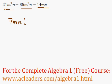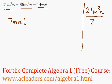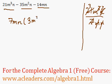Let me just write it on the side here. 21m³n divided by 7mn: 21 divided by 7 is 3, the n's cancel out, and m³ divided by m is m². So I have 3m².